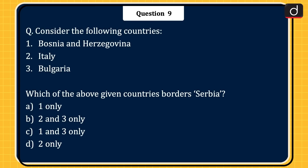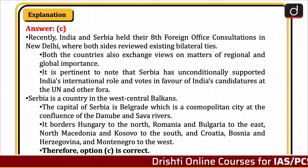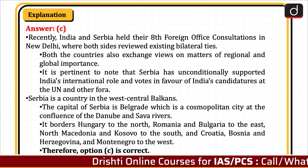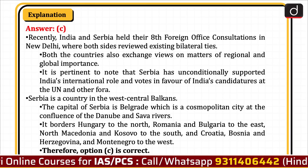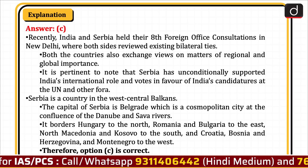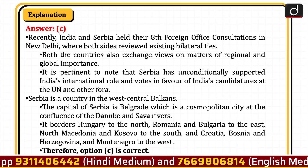Next question: consider the following countries — 1. Bosnia and Herzegovina, 2. Italy, 3. Bulgaria. Which of the above countries borders Serbia? Options: 1 only, 2 and 3 only, 1 and 3 only, or 2 only? The correct answer is option C, 1 and 3 only. Recently, India and Serbia held their eighth foreign office consultations in New Delhi, where both sides reviewed existing bilateral ties and exchanged views on matters of regional and global importance. Serbia has unconditionally supported India's international role and votes in favour of India's candidates at the UN and other fora. Serbia is a country in the west-central Balkans.